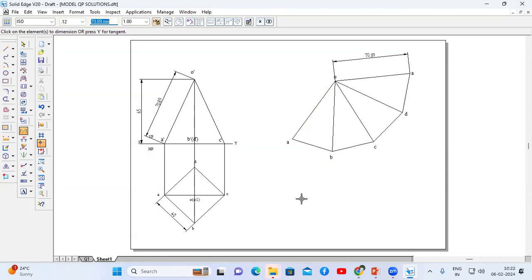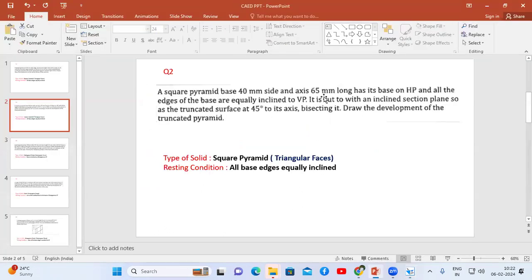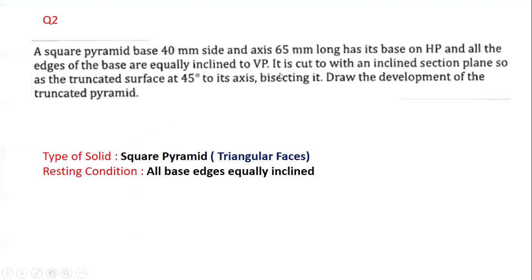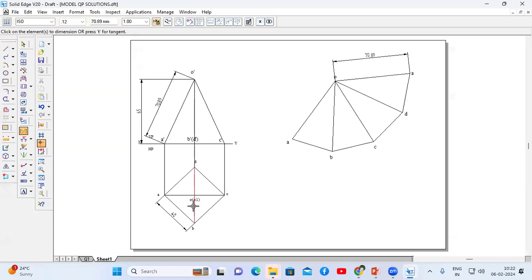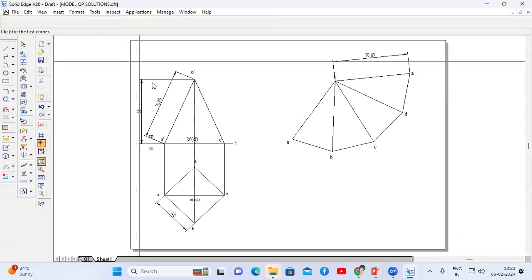The cut section condition states it is cut with an inclined section plane so that the truncated surface is at 45 degrees to its axis, bisecting it. From the midpoint of the axis, we have to draw a line which makes an angle of 45 degrees to the axis.